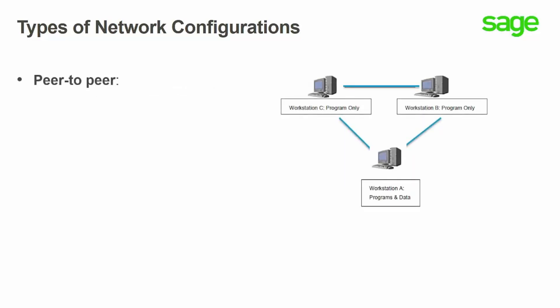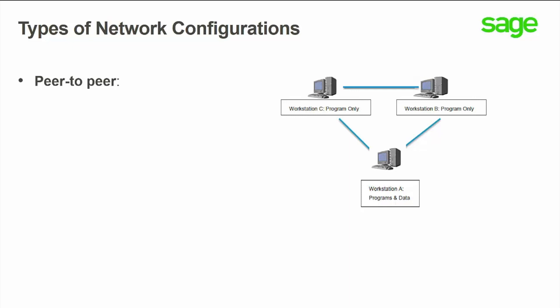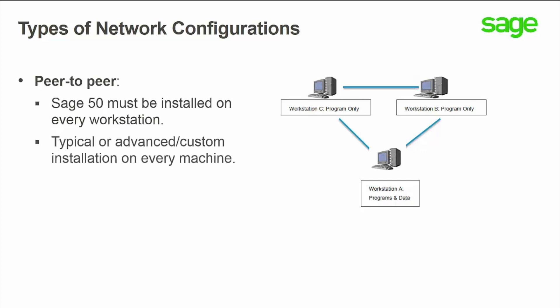In a peer-to-peer environment, the Sage50 program must be installed on every workstation. A typical or an advanced custom installation can be performed on every machine where you will be using Sage50. If the Sage50 company data will be stored in a shared location on one of the workstations, the other workstations should map a drive to the shared location to gain access to the data.